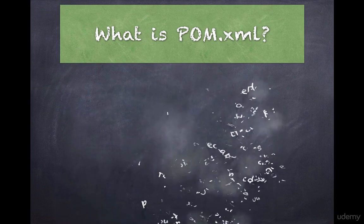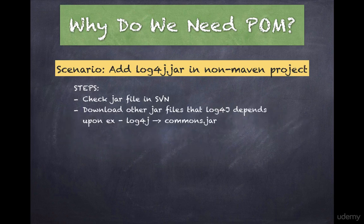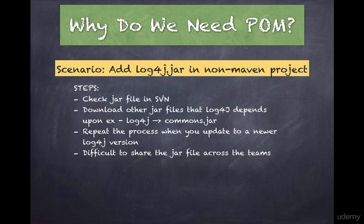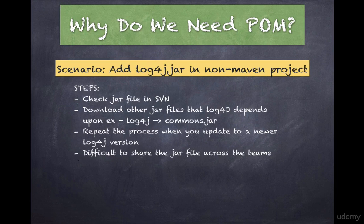Why do we need pom.xml? Enterprise level projects typically depend on a variety of open source libraries. Consider a scenario where you want to add log4j to your application for logging. To accomplish this, you would go to the log4j download page, download the jar file, and put it in your lib folder or add it to your project's classpath. There are a couple of problems with this approach. After you download the jar file, you also need to download the other jar files that log4j depends on — for example, log4j depends on common.jar.